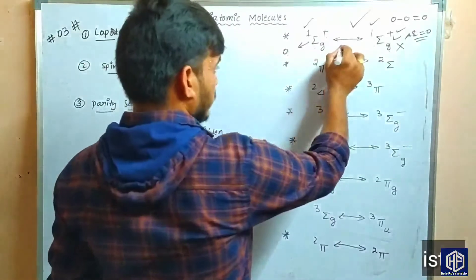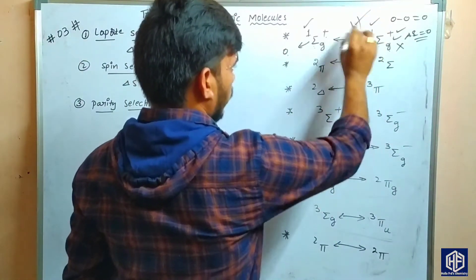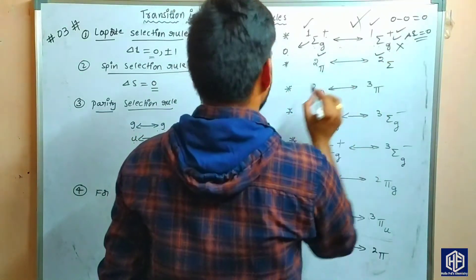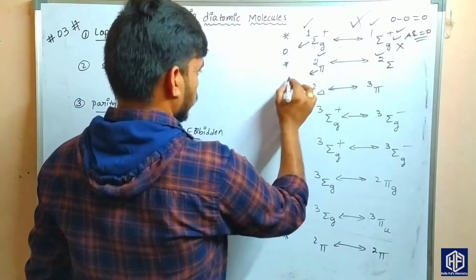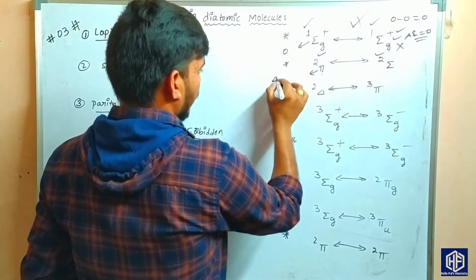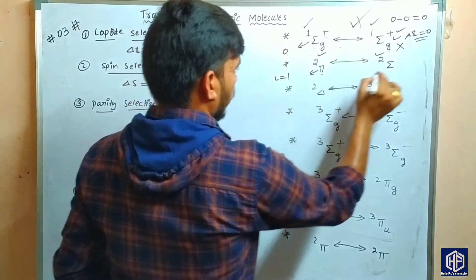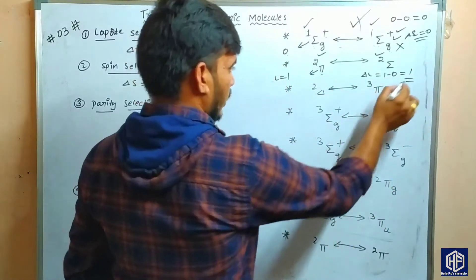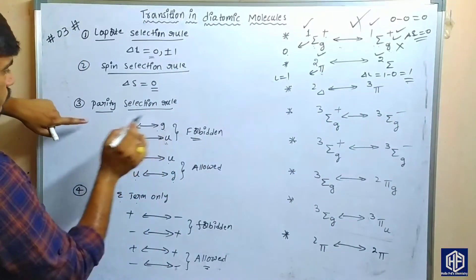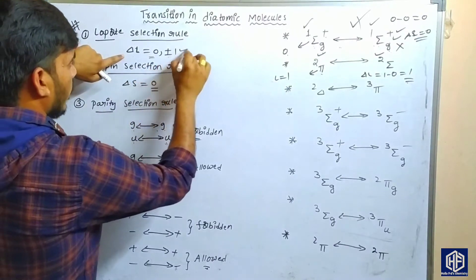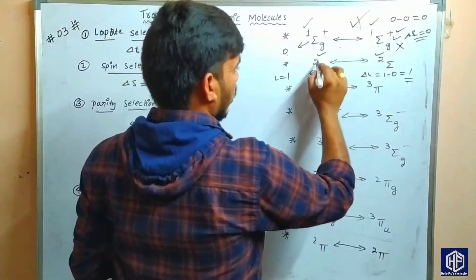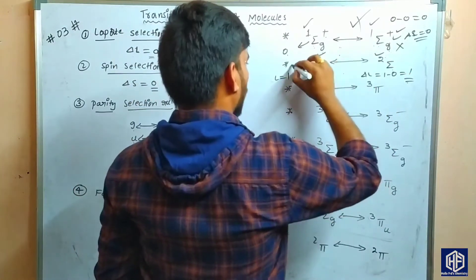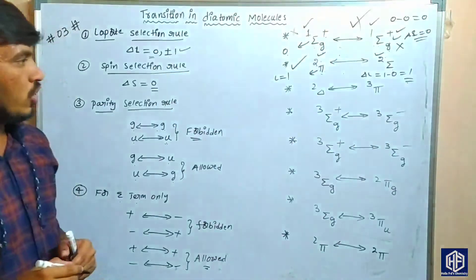In the case of ²Π to ²Σ: the spin multiplicity value does not change, so the spin selection rule is satisfied. Pi corresponds to L equals one and sigma corresponds to L equals zero, so delta L equals one minus zero equals one. This satisfies the Laporte selection rule. So the ²Π to ²Σ transition is an allowed transition.